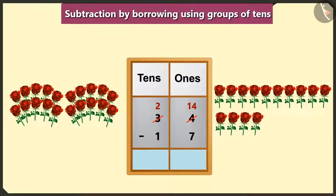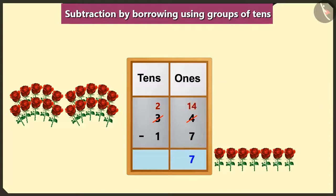Now, first of all, if we will subtract 1, 2, 3, 4, 5, 6 and 7 from 14 in the place of ones, then we will have 1, 2, 3, 4, 5, 6 and 7 left in the place of ones.